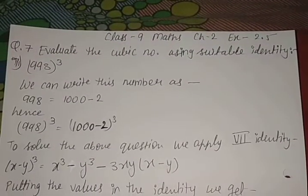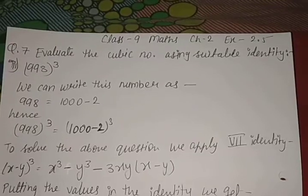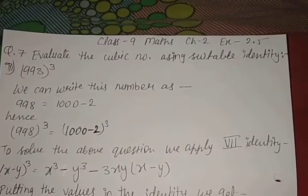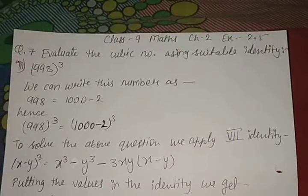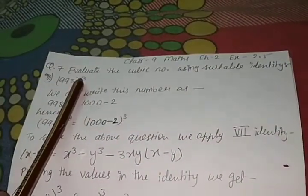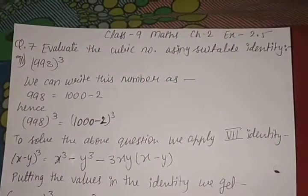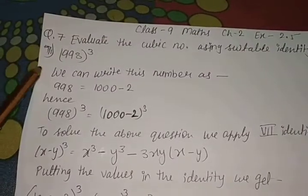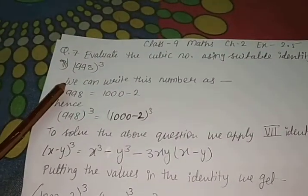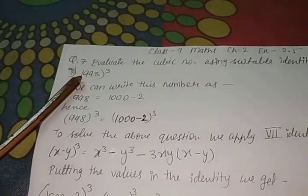Hi guys, this is Shilpa Mittal and this video is for 9th students. We are going to continue our exercise 2.5 and this is our question number 7: evaluate the cubic number using suitable identities. That means we have a number which has cubic exponentiation, but without using actual multiplication we have to find the cubic value of this number.